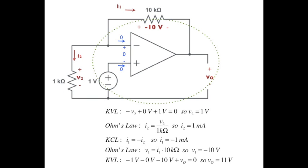Now we're in a position to write KVL around a loop that contains the output voltage as the only unknown. So minus 1 volt, minus 0 volts, minus 10 volts, plus Vout is equal to 0, or Vout is equal to 11 volts.